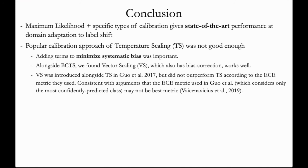Interestingly, vector scaling was introduced in the same paper as temperature scaling, but was not ultimately recommended by the authors. And this is consistent with arguments in other papers that the ECE metric that the authors used is not the best metric to gauge calibration, as it only considers the most confidently predicted class. We expect also that other calibration forms that contain bias correction terms, such as matrix ODIR, may also work well.